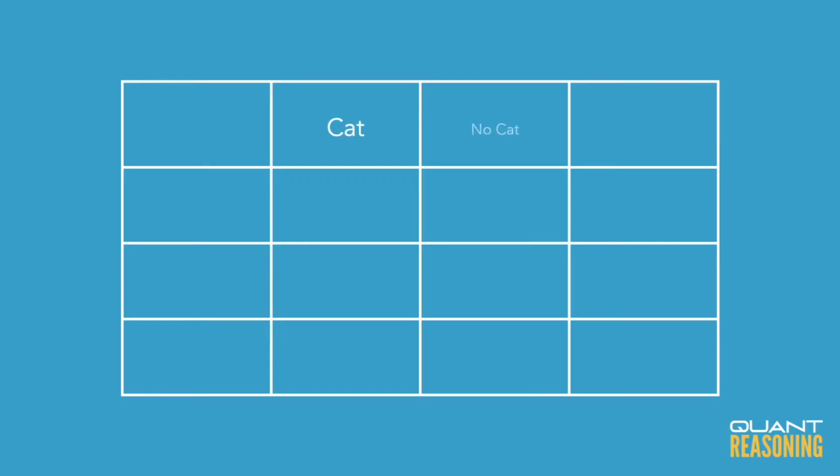Same thing with 'at least one dog' — you've got households that don't have dogs and households that do have dogs. So this comes down to either you have cats or don't have cats, and either you have dogs or don't have dogs. That's how we're going to set up our Carroll diagram.